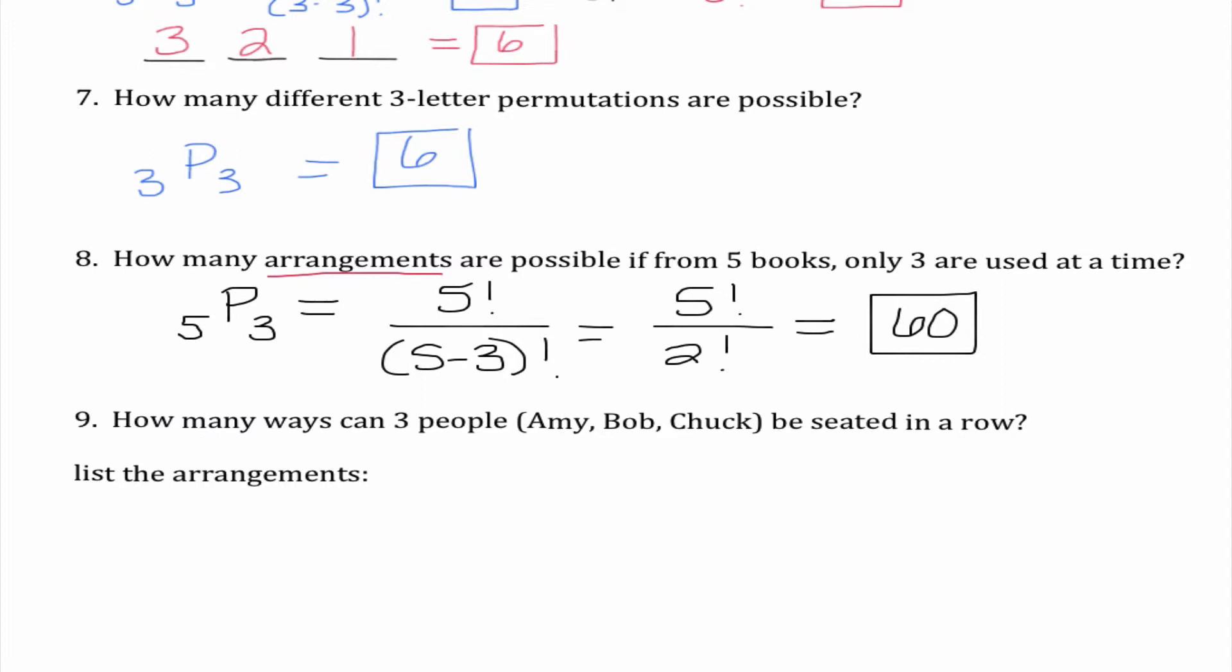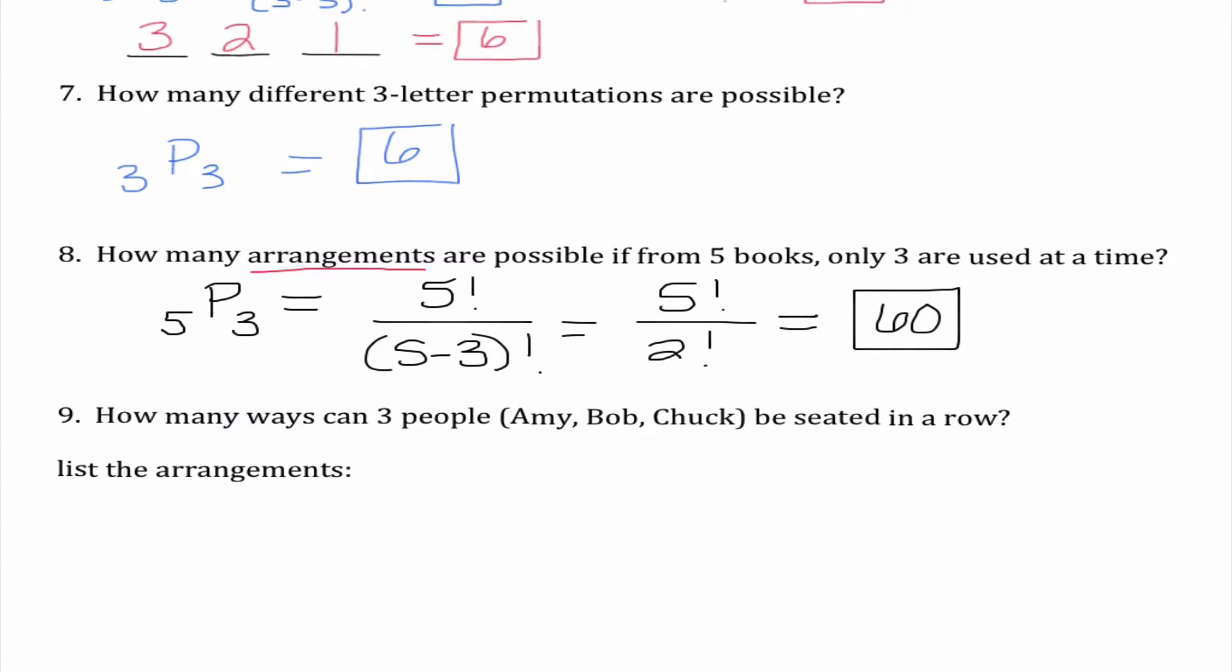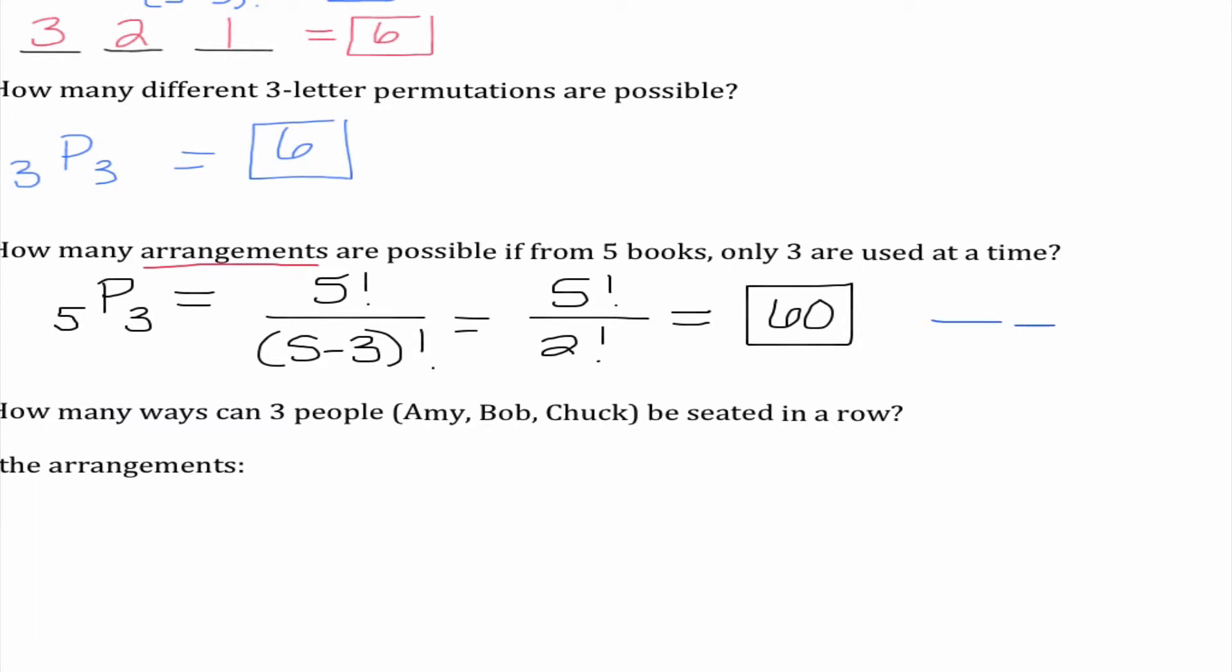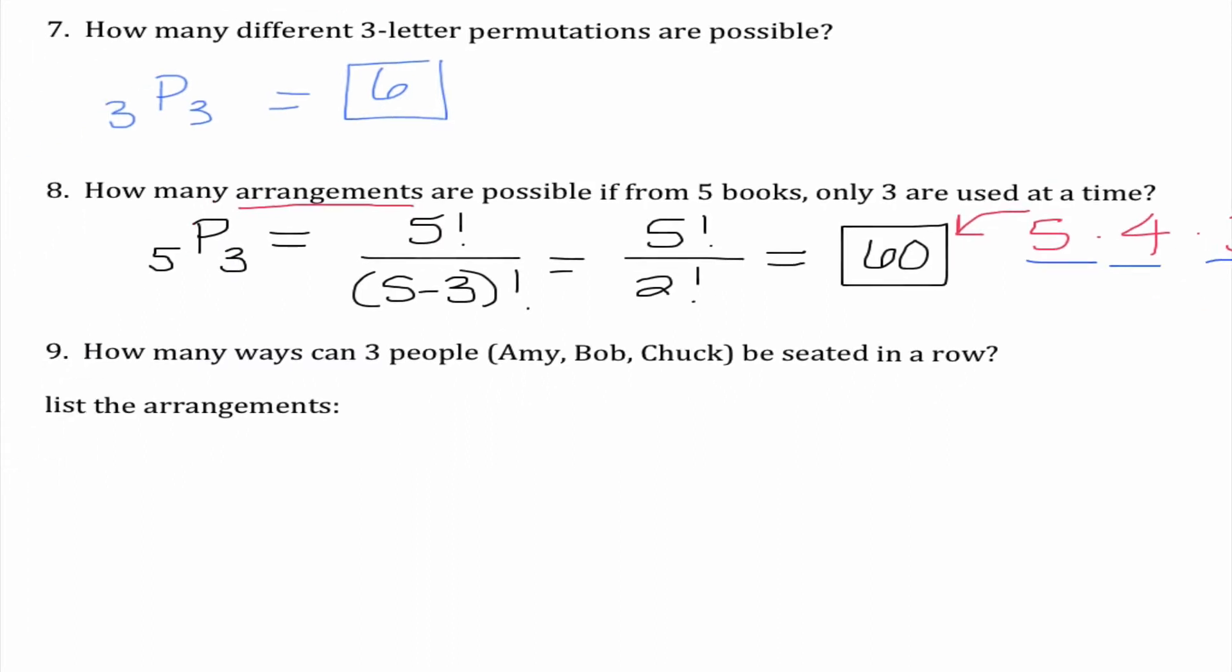If you guys had wanted to you would notice that this actually could also be used as a fundamental counting principle problem. There are five options in the first spot. Four options in the second spot and three options in the third spot. When I multiply all those together I get 60. Okay so lots of different ways we could think about these problems.